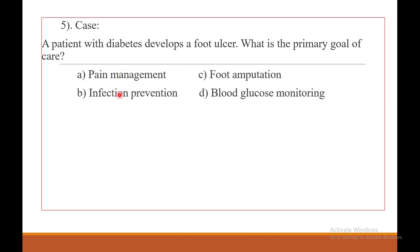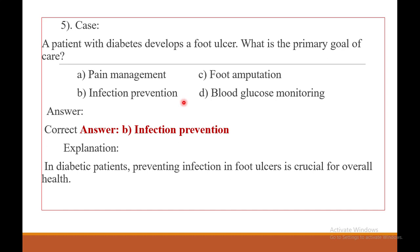The choices are: A — pain management. B — infection prevention. C — foot amputation. D — blood glucose monitoring. The answer for this one is B — infection prevention. In a diabetic patient, preventing infection in a foot ulcer is crucial for overall health.